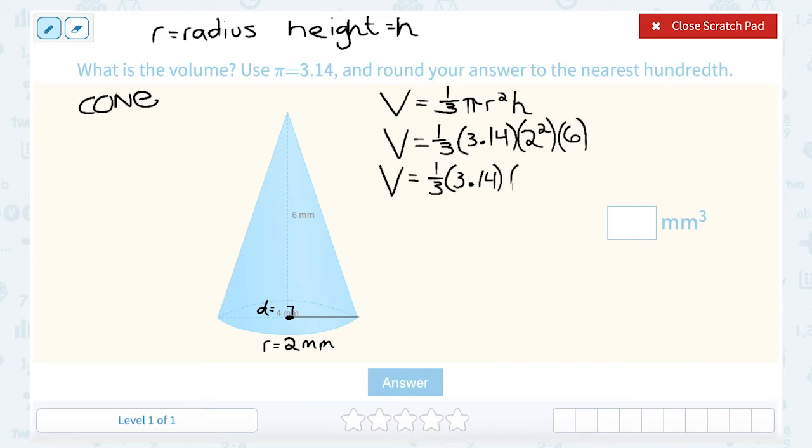So 2 squared, or 2 times 2, gives me 4. And then from here, I'm going to be multiplying all of these numbers together. So we can just take our calculator.